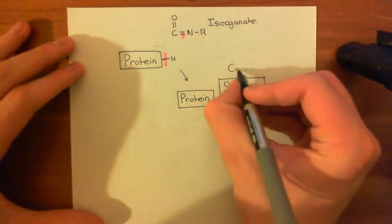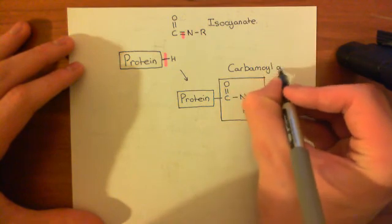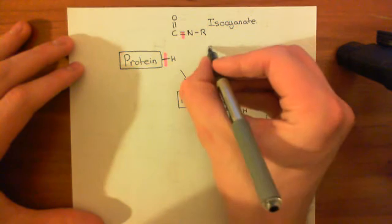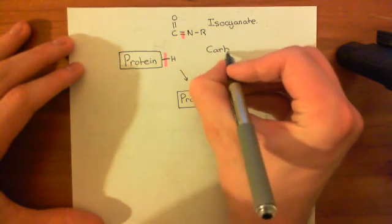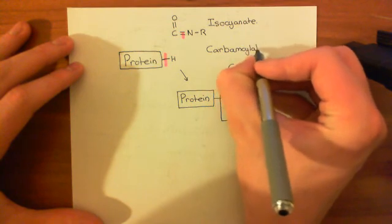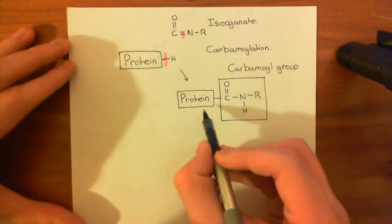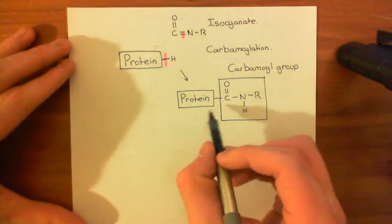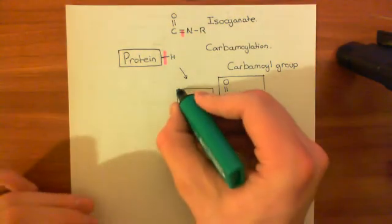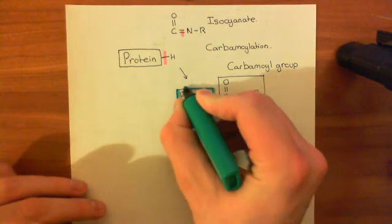So this is a carbamoyl group. And this process of adding carbamoyl groups on is known as carbamoylation, which is a truly fantastic word. Carbamoylation. So basically, we say that nitrosourea drugs also carbamoylate proteins. Now, do you think this is good for the protein, having these groups added onto it? No, this is going to happen all over the protein, and it's going to lead to dysfunction of the proteins.